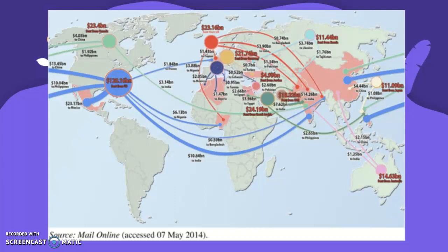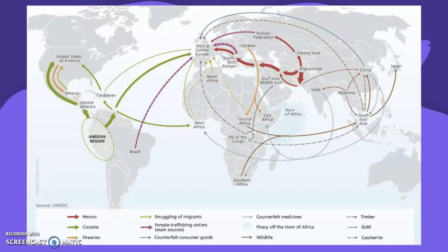Here's a graph or map showing illegal flows globally. I'm not sure if it's for a specific product, so I'm not going to discuss it in detail. Here's a better diagram from the UN showing flows of heroin specifically.